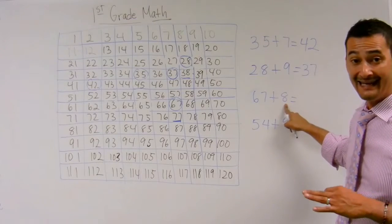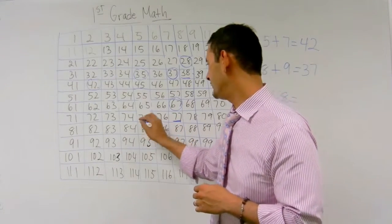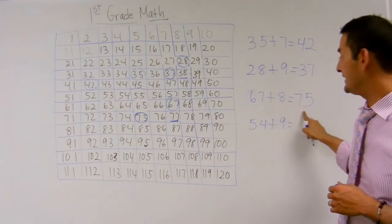Here I have 8. I know that 8 is 2 less than 10, so I'm going to move back 2 spaces. 1, 2, the answer is going to be 75. 67 plus 8 equals 75.